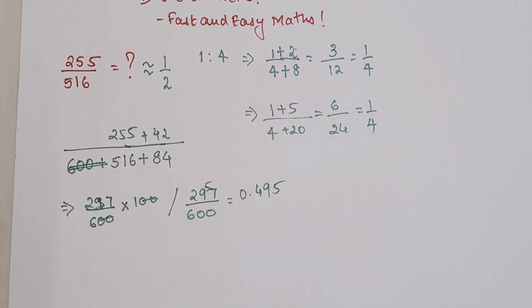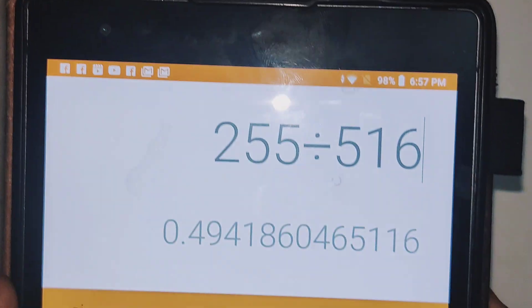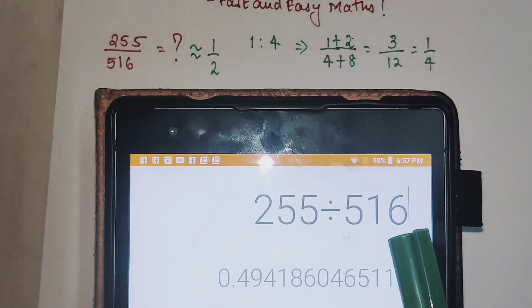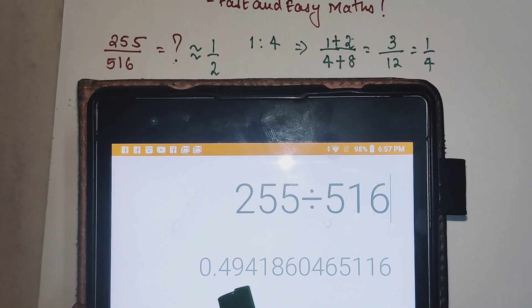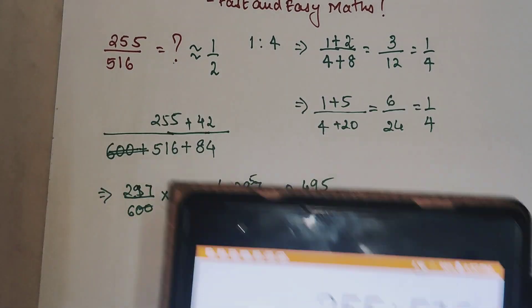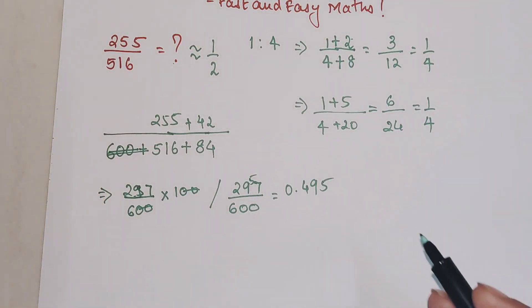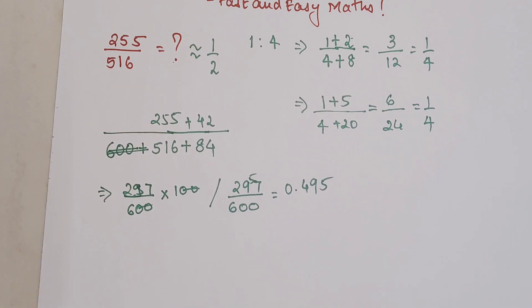Let's very quickly see what is the actual answer in the calculator. If you can see, 255 divided by 516, the answer is 0.4941, and we are getting 0.495, so that's very close to your actual answer.